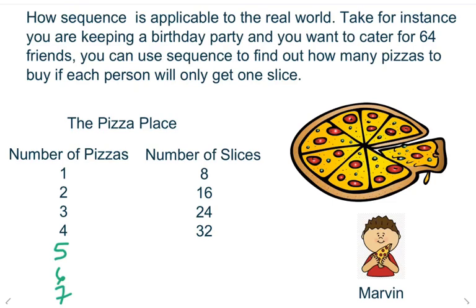Now let us look at the relationship between the number of slices. We realize that it is increasing by 8 so we could continue: 40, 48, 56 and so on. And we could continue until we get to 64, then we realize how many pizzas to buy.